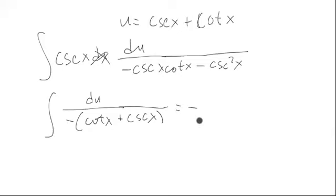So this really looks like negative integral of du over u, which is negative natural log absolute value of cosecant x plus cotangent x plus c.